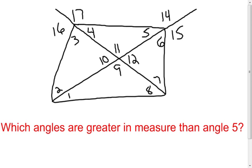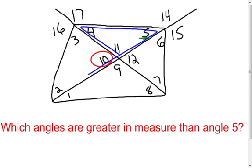Now on the next one, I'm going to go the other way. I'm going to look at angle 5 and find all the angles that are larger in measure — that have a greater measure than angle 5. I want to look at angle 5 as a remote interior angle and find an exterior angle to a triangle it's in. In this triangle, angle 10 would be the exterior angle, so angle 10 is larger than angle 5. Angle 12, its vertical angle, will also have to be larger in measure than angle 5.